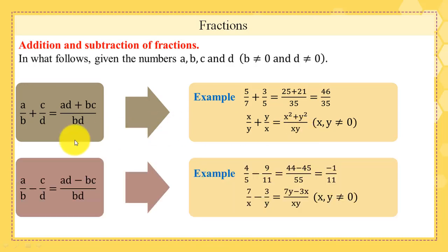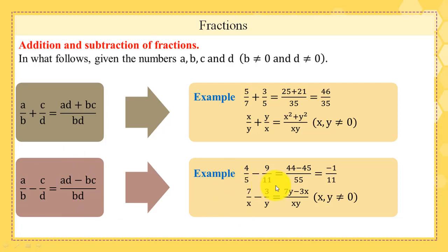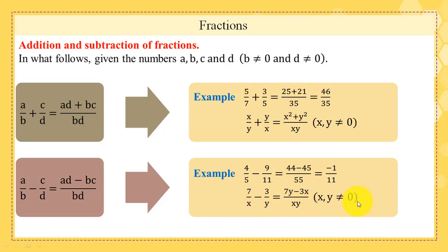Second, subtraction: a/b − c/d = (ad − bc)/(bd). Example: 4/5 − 9/11 = (4×11 − 5×9)/(5×11) = (44 − 45)/55 = −1/55. Also, 7/x − 3/y = (7y − 3x)/(xy), where x and y are different from 0.